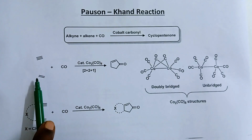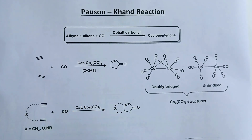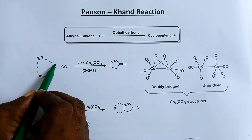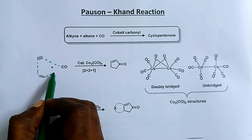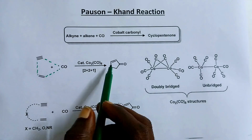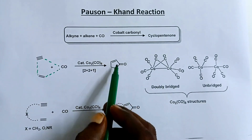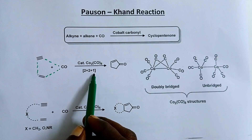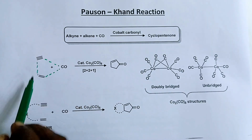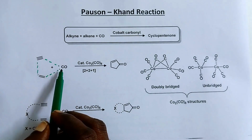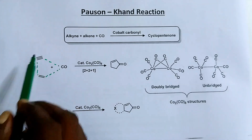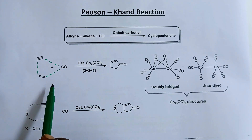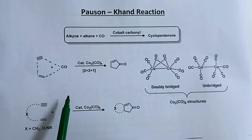Look at this — alkyne, alkene, carbon monoxide. There is a C-C bond formation here, and again between alkene, alkyne, and carbon monoxide you get cyclopentenone. This reaction is a 2+2+1 cycloaddition because there are 2 carbons in alkyne, 2 carbons in alkene, and 1 carbon in carbon monoxide. So the Pauson-Khand reaction is an example of 2+2+1 cycloaddition.